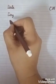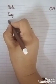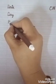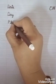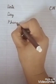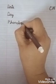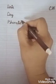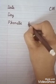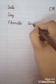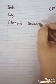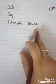Now here, write down phonetic sound. The first letter should be capital P, then H, O, N, E, T, I, C. Then leave some space and write down capital S, O, U, N, D. Phonetic sound.